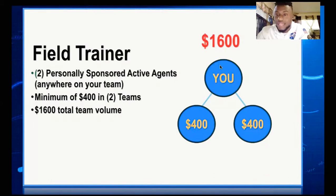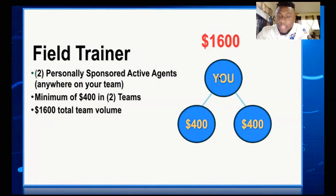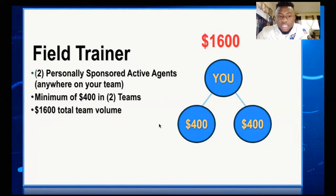If you just signed someone new this month and they only bring 400, that 400 counts. But if you signed them last month and got a new one this month — only 400 of that new person's volume counts for that new leg. So if one person has 800 and you need 1600 total but only have 800, you're missing 800. You can sign another agent for 800, or sign 2-3 clients — then you reach 1600 and get your promotion.